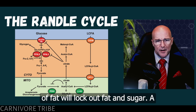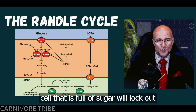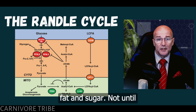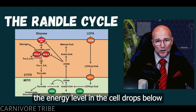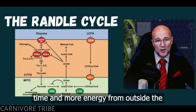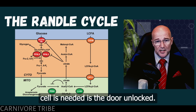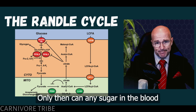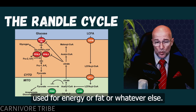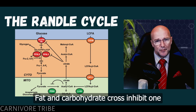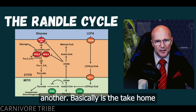A cell that's full of fat will lock out fat and sugar. A cell that is full of sugar will also lock out fat and sugar. Not until the energy level in the cell drops below what is required at that time — and more energy from outside the cell is needed — is the door unlocked. Only then can sugar in the blood, or fat, start entering the cell and being used for energy. Fat and carbohydrate cross-inhibit one another — that's basically the take-home message of the Randall cycle.